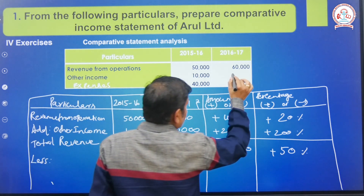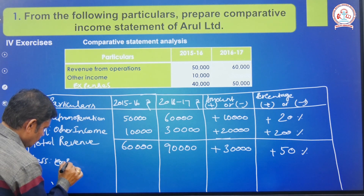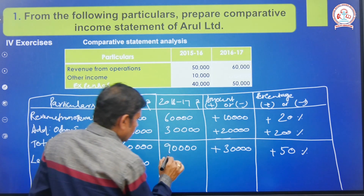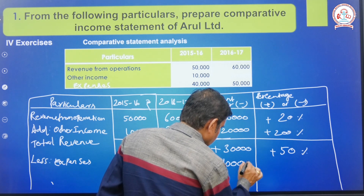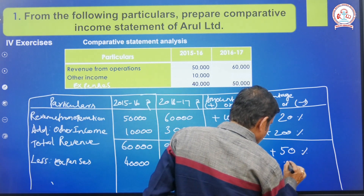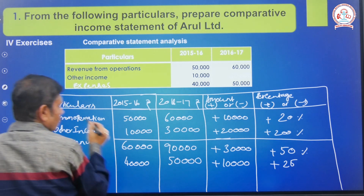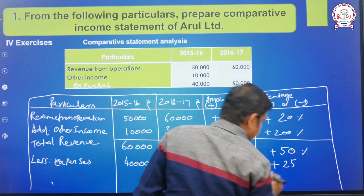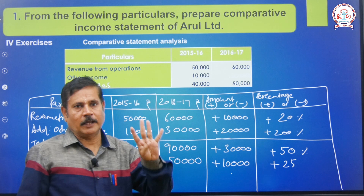Less expenses: first year 40,000, second year 50,000. The increase is 10,000. Percentage: 10,000 divided by 40,000 into 100. Since 40 divided by 10 is 4, that gives 25 percent answer.